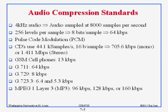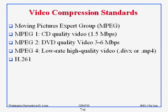GSM cell phones use 13 kilobits — that is the older standard; newer ones even go down to 5 kilobits. CDs use 700 kilobits mono and 1.4 megabits stereo for good quality music. Next time we will talk about the video compression standards — MPEG-1, MPEG-2, and MPEG-4 — and continue from there.